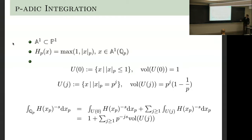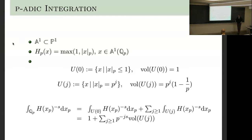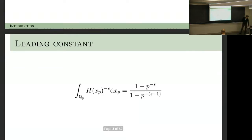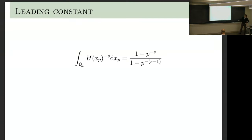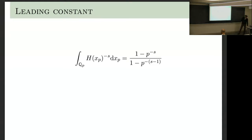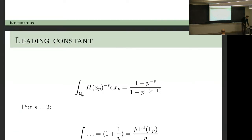So then we integrate. It's a sum for all the values e to the j, times volume times this, and then the leading constant. So it's a geometric series that we can sum. This is what comes out. And then we are interested in the special value.